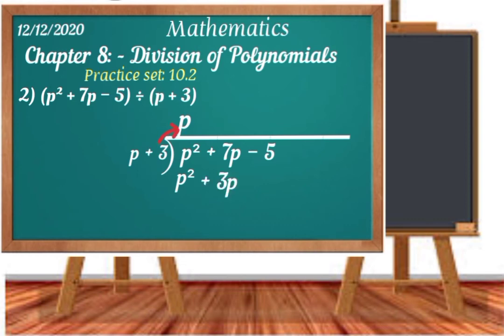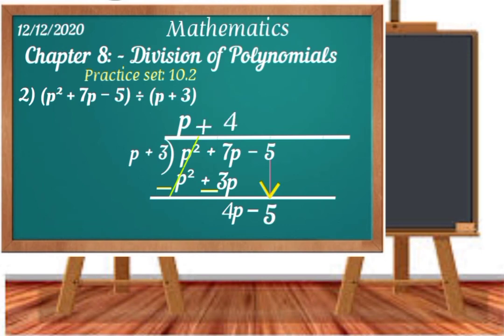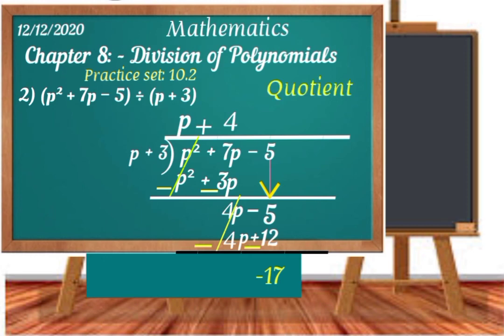P into p gives p². And 3 into p is 3p, so we write plus 3p. Apply minus sign and cancel. Now 7p minus 3p gives 4p. Bring minus 5 down. Now the next quotient term is plus 4, so p multiplied by 4 gives 4p, and 3 × 4 = 12. Subtract: 4p minus 4p is cancelled. Now minus 12 and minus 5 — after adding we get minus 17.